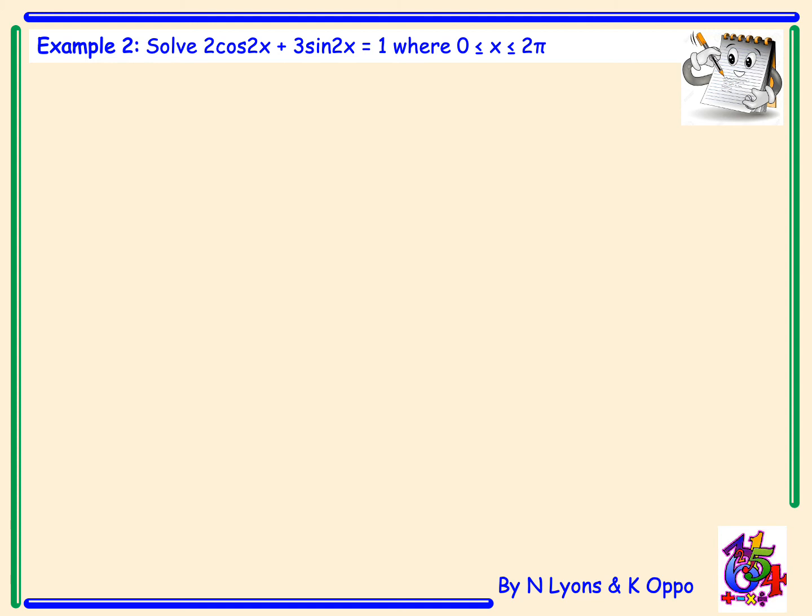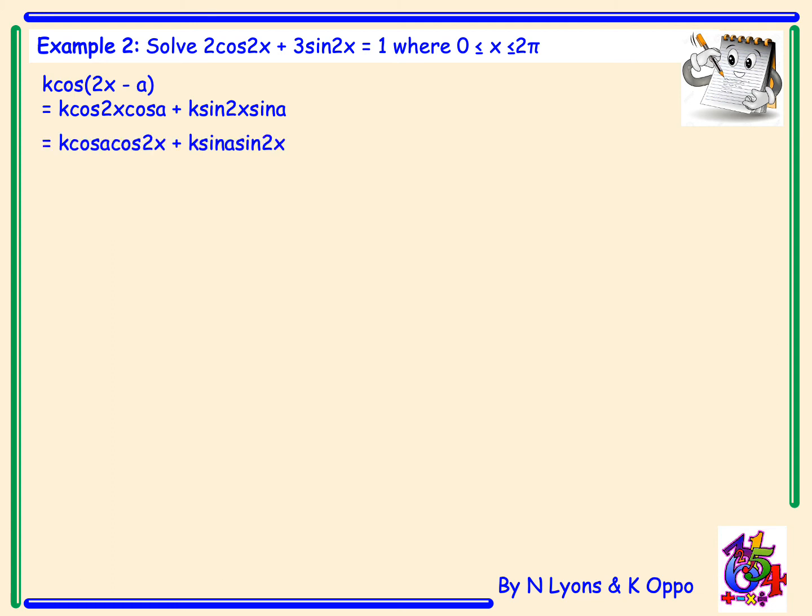So we're always starting here with the wave function. Again we're going to use k cos of 2x minus A. So we've got a multiple angle as well here to look out for. So the expansion gives k cos 2x cos A plus k sin x sin A. Again we need to rearrange this to put k cos A together and k sin A together, and after that we will write 2 cos 2x plus 3 sin 2x underneath in order to equate our coefficients.